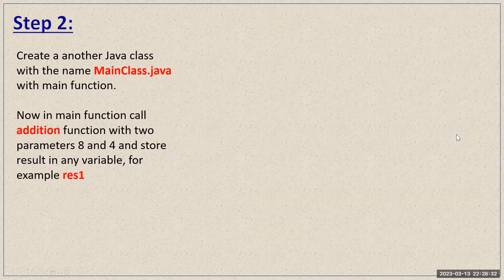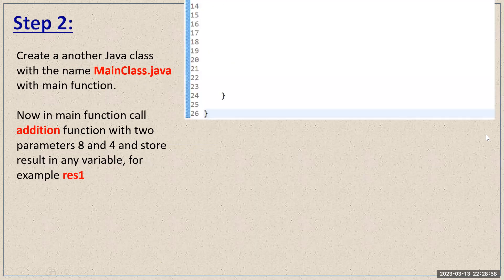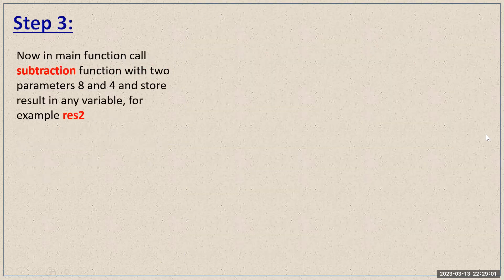In the second step, you have to create another class with the name MainClass.java and create the main function in it. In the main function, you have to call the addition function of the Calculator class with two parameters — eight and four — and whatever result you get, store it in a variable like res1.